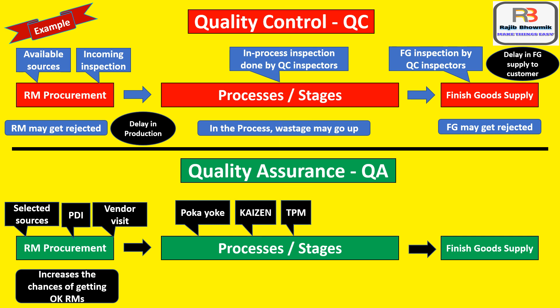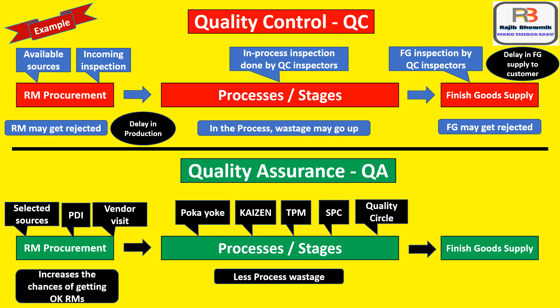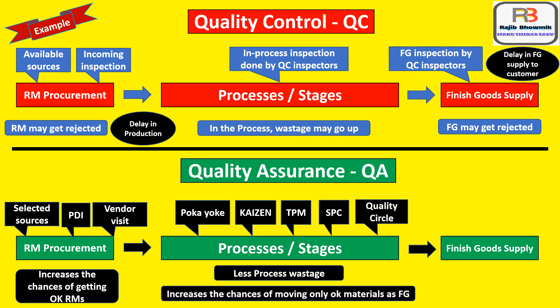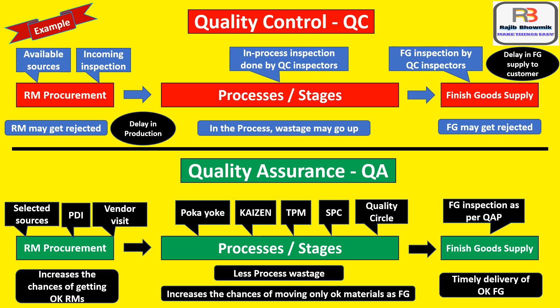Poka-Yoke, Kaizen, TPM (Total Productive Maintenance), SPC (Statistical Process Control), Quality Circles, etc. are implemented in the process, which ensures less process wastage and increases the chances of moving only OK materials as finished goods. In the finished goods area, FG are inspected by quality assurance people using a quality assurance plan, which ensures timely delivery of OK finished goods to customers. So this is the difference between quality control and quality assurance.